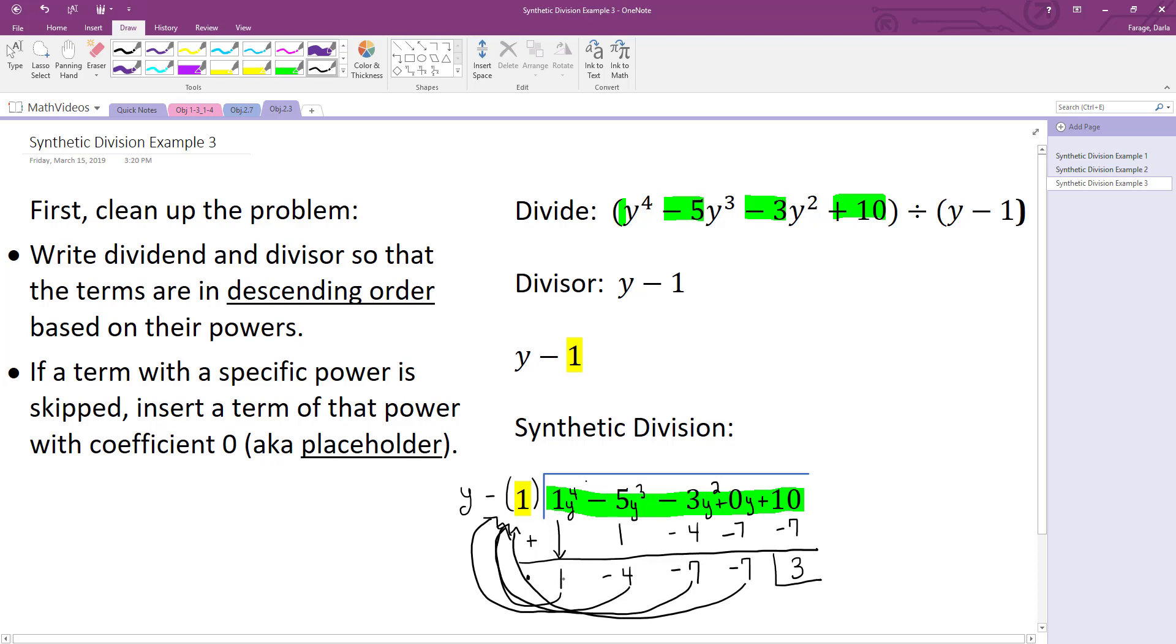And it's going to start with coefficient 1, so it's going to be 1y cubed and then just go in descending order of powers at that point. So minus 4y to the 2nd minus 7y minus 7. That's our quotient.